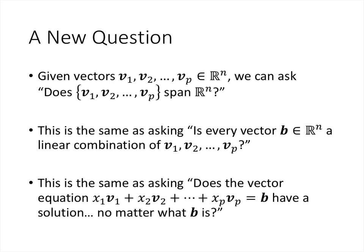And now this gives us a new question. So given a set of vectors, we can ask, well, do those vectors span all of Rn? Is it the case for these particular vectors that the span of that set of vectors is all of Rn? And again, that's the same as asking, is every vector b in Rn a linear combination of the v's? And again, that's the same as asking, does the vector equation have a solution no matter what b is? So we're not talking about a specific vector b, we're talking about, would this work for every b? No matter what b vector you put there, would this equation have a solution? And that's a question that we're going to learn how to answer.